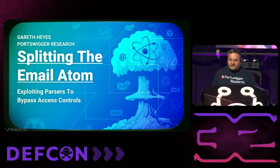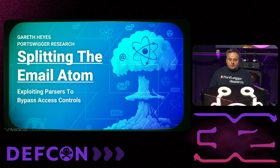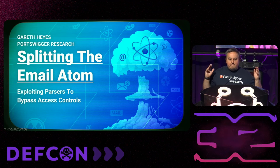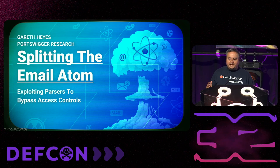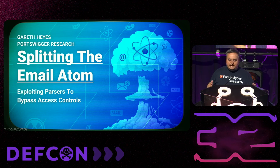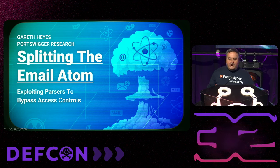Welcome to 'Splitting the Email Atom: exploiting parsers to bypass access controls.' Email addresses might seem mundane, but the RFCs governing them are downright bonkers. I'll show you why predicting an email destination is highly complex, and I'll take you on a journey of ancient protocols, exotic encodings, access control bypasses, and how I gained remote code execution from an RFC-compliant email address.